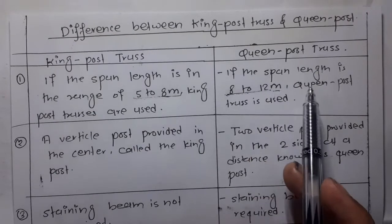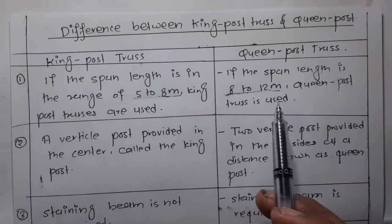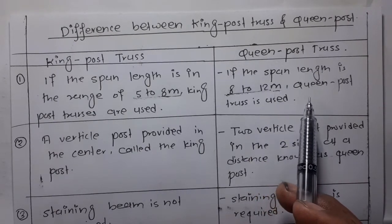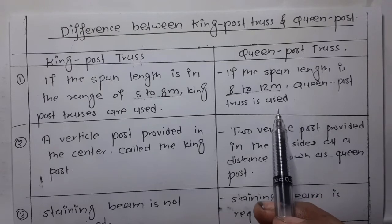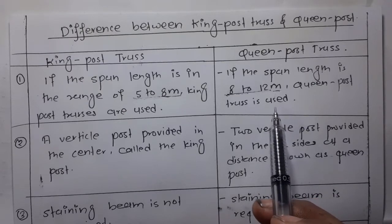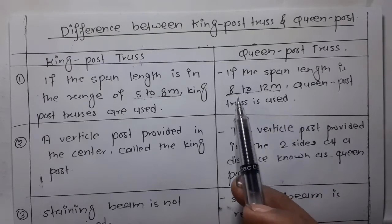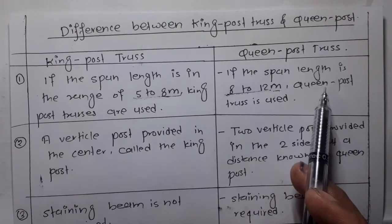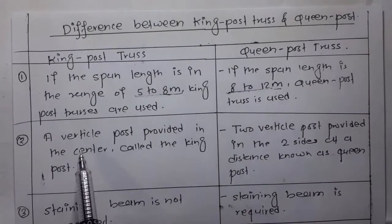If the span length is 8 to 12 meters, then queen post truss is used.